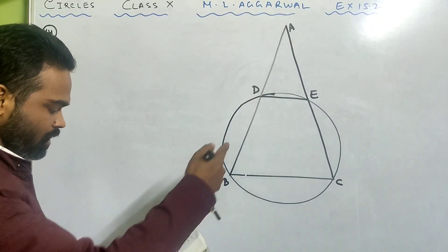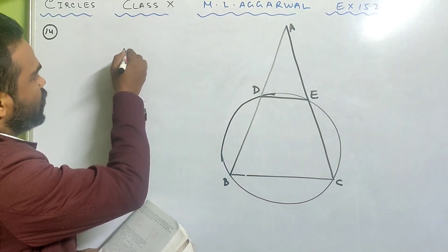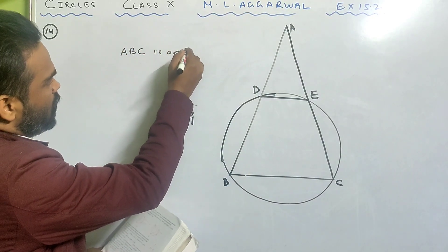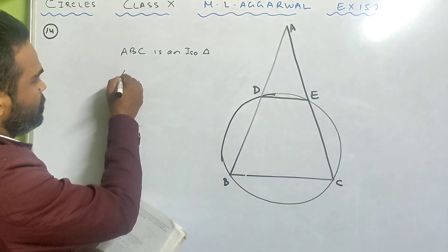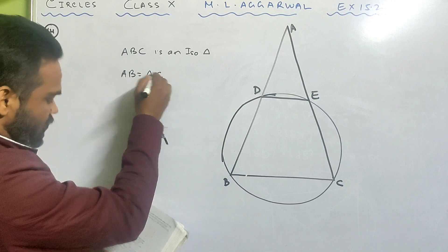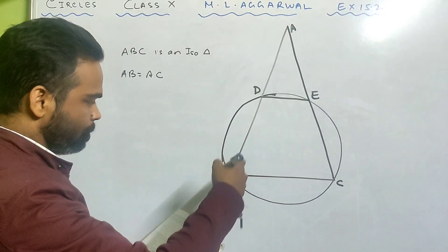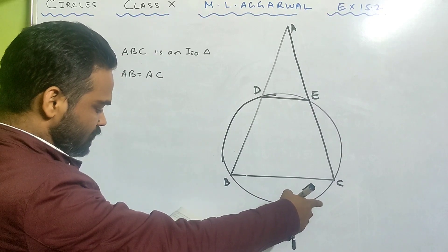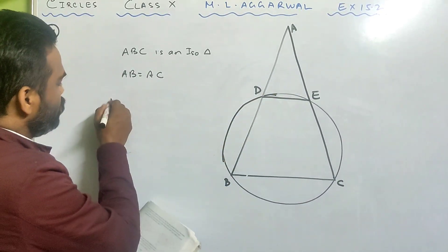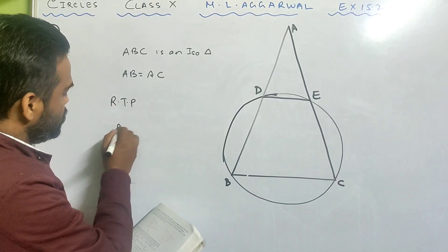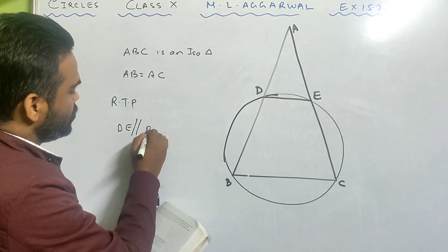Class 10. In the adjoining figure, ABC is an isosceles triangle in which AB is equal to AC, and a circle passing through B and C intersects side AB and AC at D and E. We need to prove that DE is parallel to BC.